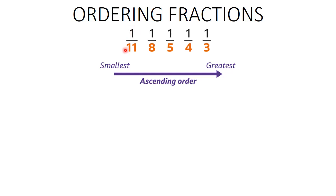If you score 1 over 11 in the test you missed 10 questions. If you score 1 over 8 you missed 7 questions. If you score 1 over 5 you missed 4 questions. If it's 1 over 4 you missed 3 questions. If it's 1 over 3 you missed 2 questions. This is a strategy to order fractions without pen and paper — find how many questions were missed and look at them as subject scores for one pupil.